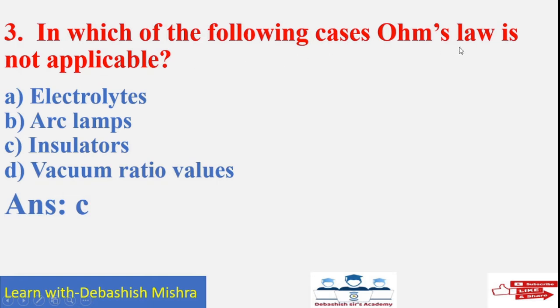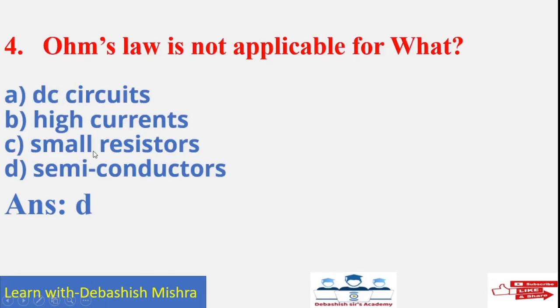In which of the following cases, Ohm's law is not applicable? Ohm's law is applicable for conductors and it is not applicable for insulators. Remember this point. Ohm's law is not applicable for what? DC circuit, high currents, small resistors, semiconductors. Answer D, semiconductors. Ohm's law is not applicable for semiconductors.